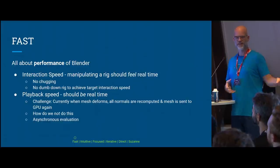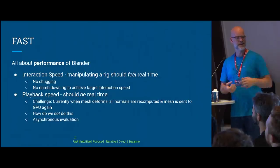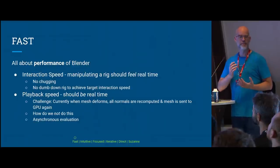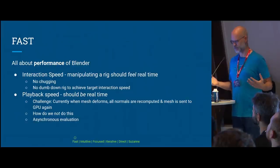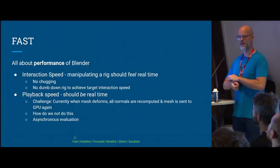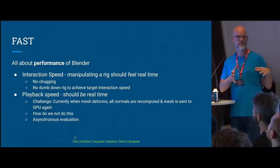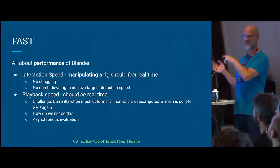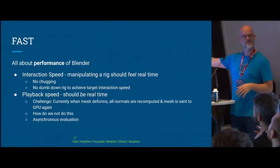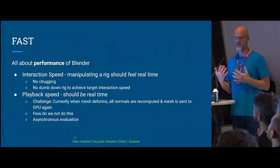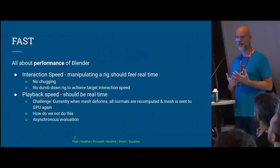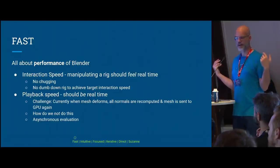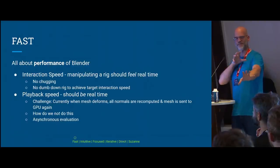It should work on the final default mesh. Then there's playback speed — when you do a play blast, that should be real time at your project frame rate. Currently Blender recomputes all normals on every deformation and sends the whole thing through the GPU pipeline on every single change, so it's a challenge to avoid that. Another idea is asynchronous evaluation so the character you're working on responds in real time, while background crowd characters update at a lower frame rate — with user control over this when foreground and background overlap matters.